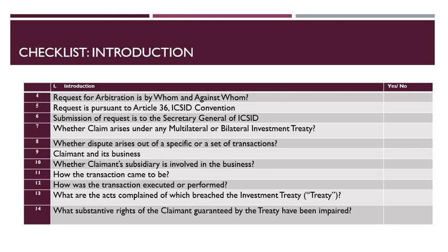Often the claimant may be based in another country, but for the sake of investment the claimant may incorporate a company or any other business entity in the host state. Serial number 11 states how the transaction came to be — here you could cover how the offer, negotiation, acceptance, and signing of the contract, if any, took place and how the investment came to be. Serial number 12 discusses how the performance of actions under these agreements took place. In item 13 you could discuss briefly the acts of the host state or its agents that led to the impairment of the investment and violation of the investment treaty. In serial number 14 you could discuss the substantive rights of the claimant guaranteed by the investment treaty that have been impaired or violated.